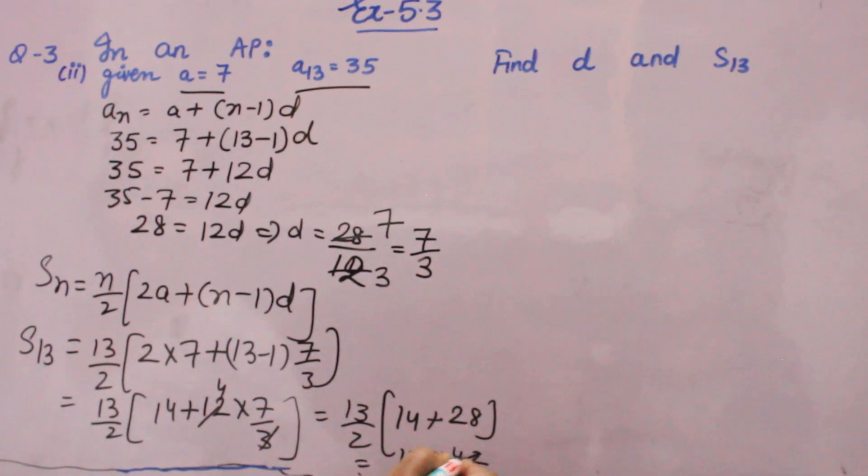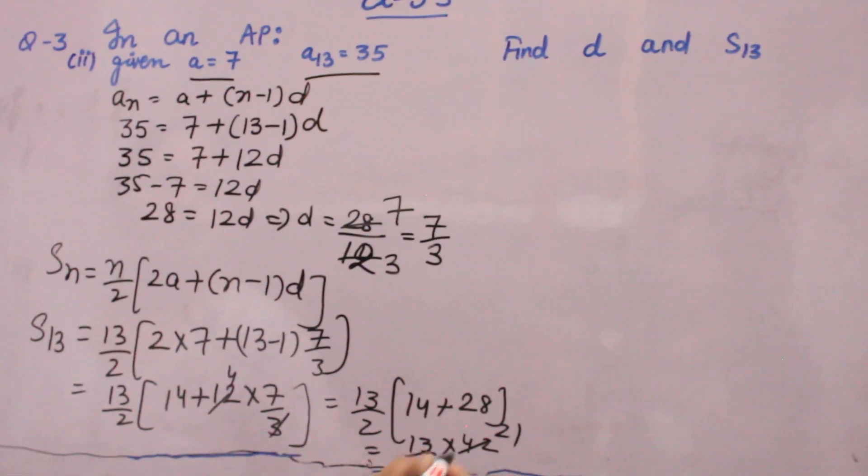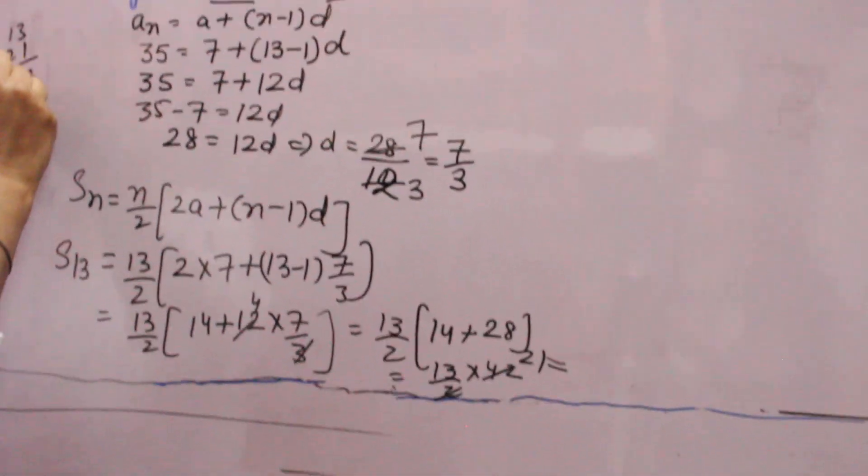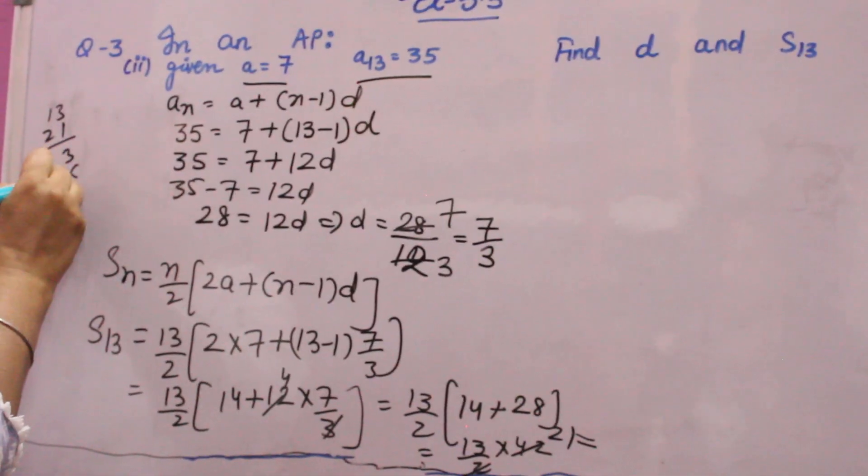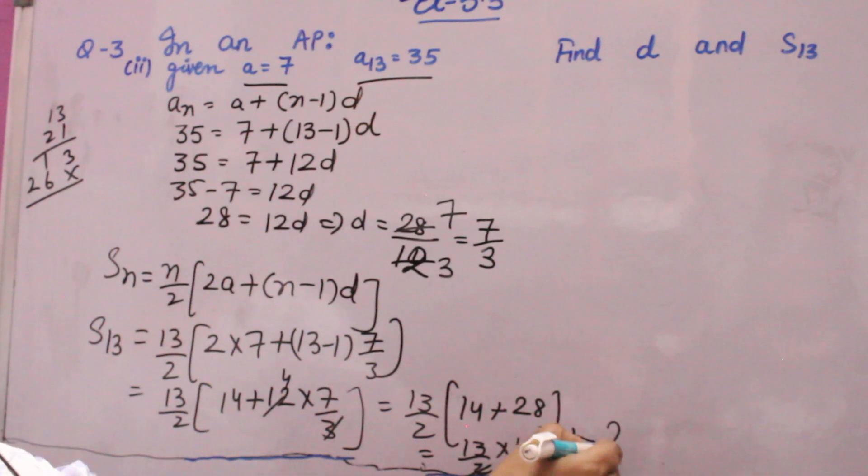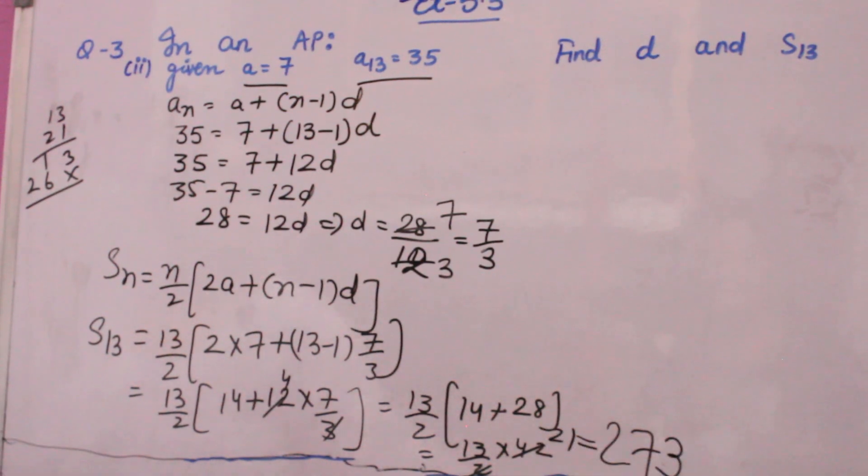Now you will cancel 13 into 21 you will do, 13 into 21. 3 ones are 3, 1 one is 1, 3 twos are 6, 2 ones are 2. So 273 will be the answer. Thank you.